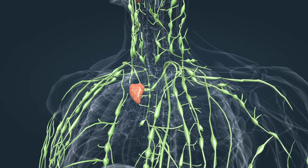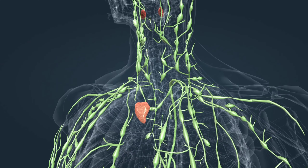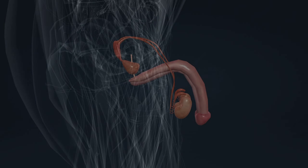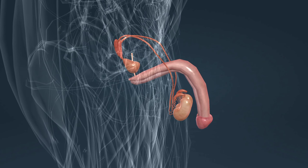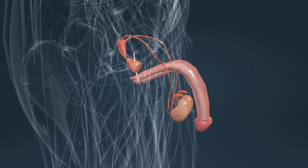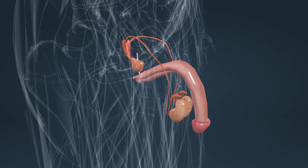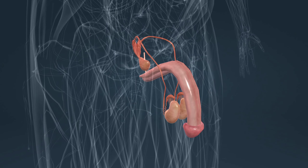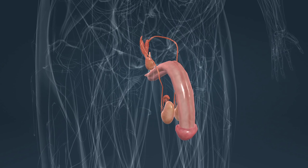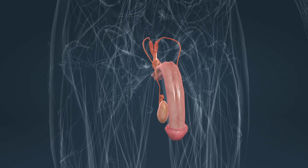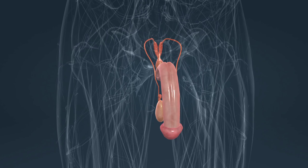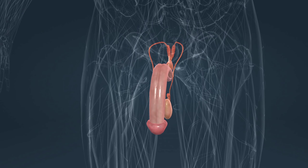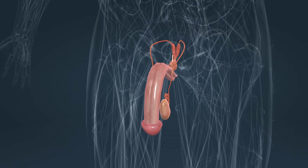Genitalia are responsible for reproduction. They produce gametes. During fertilization, the egg unites with the sperm and they form a zygote, from which the embryo develops. The reproductive glands in males are the testes, which produce sperm. Sperm is stored in the epididymis. During ejaculation, sperm is ejected together with semen through the urethra. Semen is produced by the prostate and the seminal vesicles.